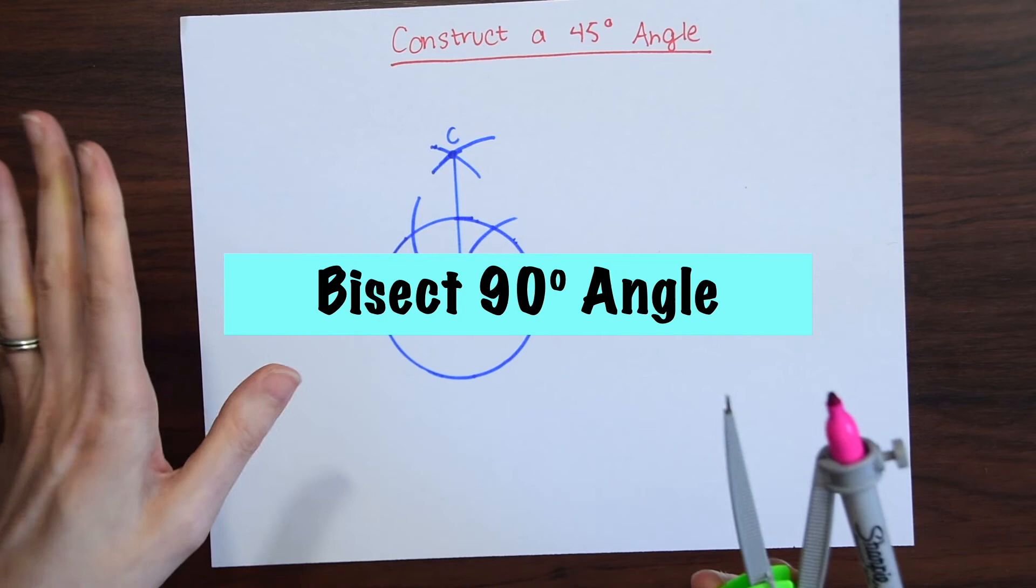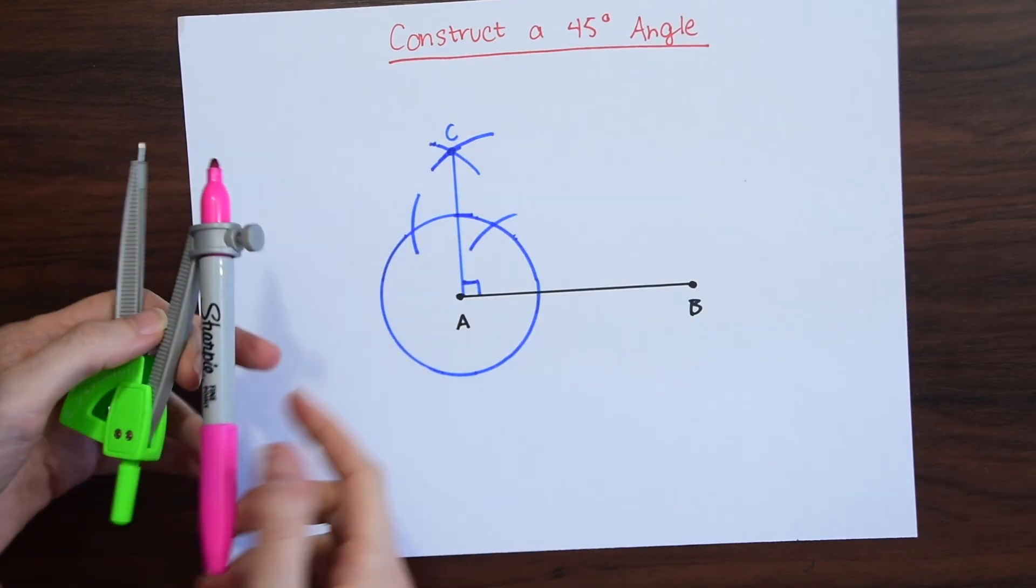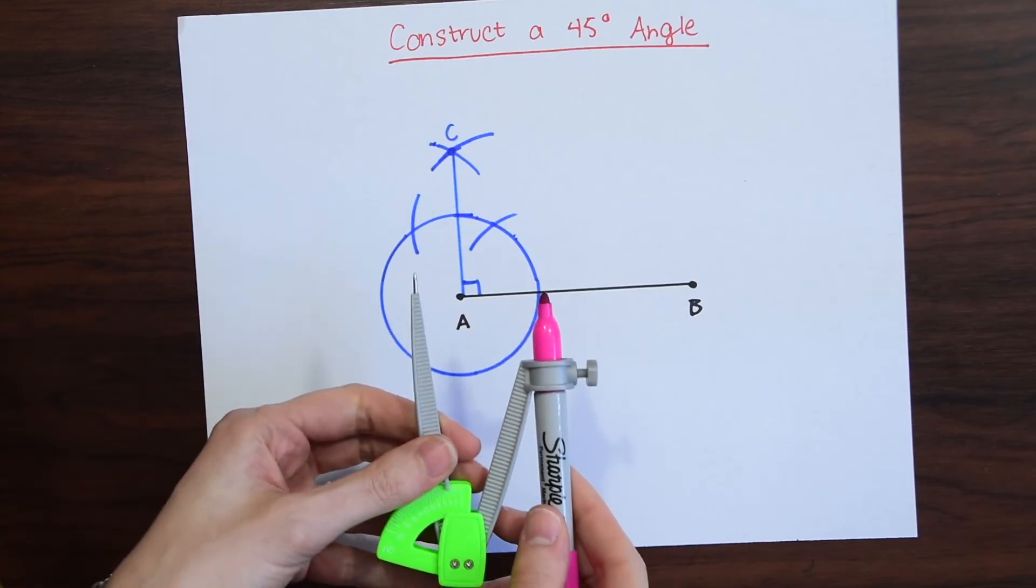Now we're going to make our 45 degree angle and we're going to be bisecting this 90 degree angle in half. So we'll take our compass again.